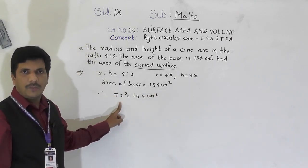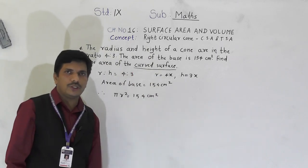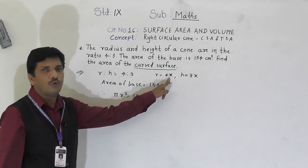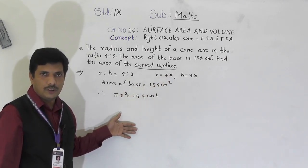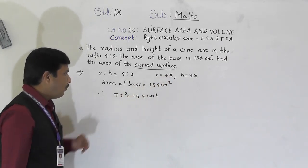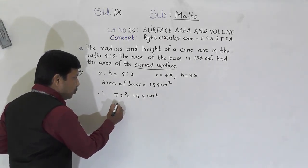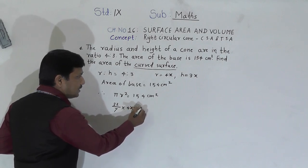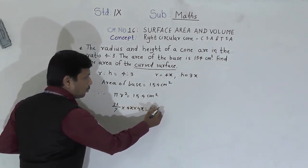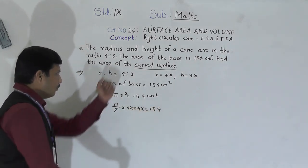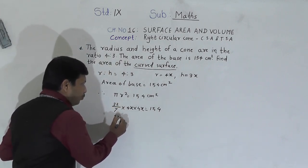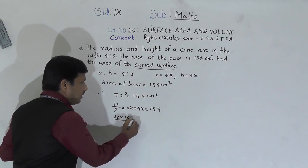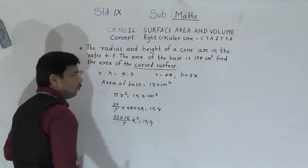We have πr² = 154 cm². We substitute r = 4x, so π × (4x)² = 154. Using π = 22/7: (22/7) × 16x² = 154, which gives (22 × 16x²)/7 = 154.